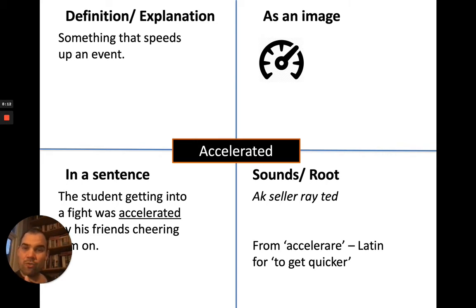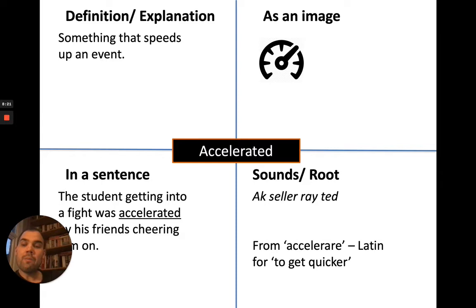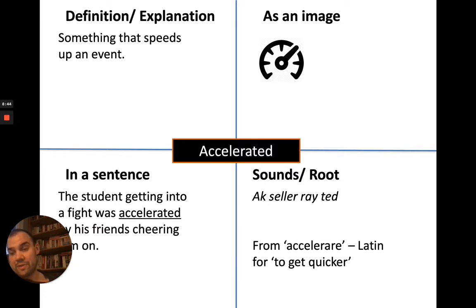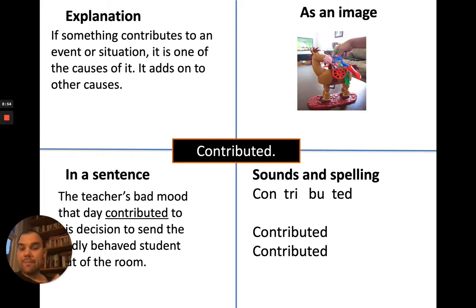We could also talk about something accelerating. An accelerant in history is something that speeds up an event — maybe that event would have happened eventually anyway, but this thing makes it happen faster. For example: 'The student getting into a fight was accelerated by his friends cheering him on.' You've seen that in the playground — two students argue, their friends cheer them on, then they fight. Maybe that fight would have happened anyway, but it sped it up.